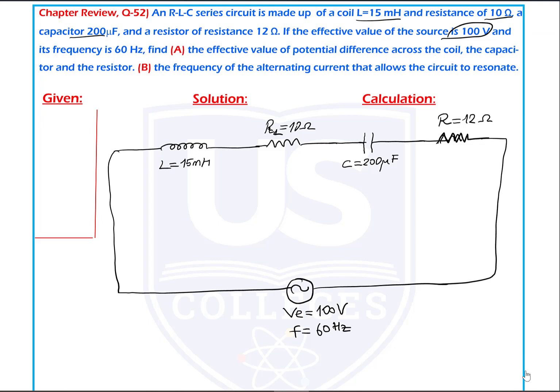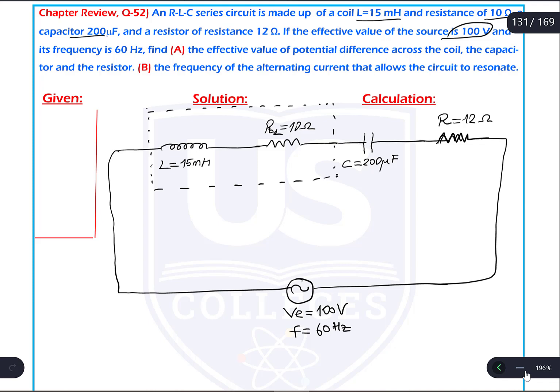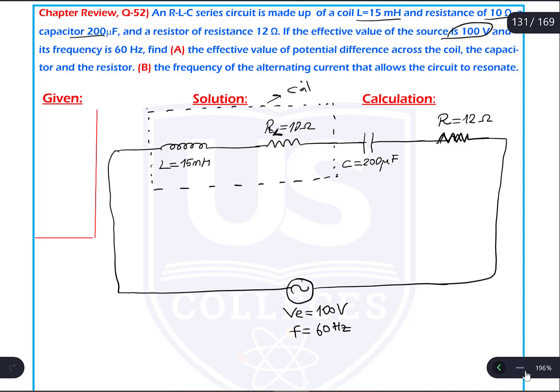Find the effective value of the potential difference across the coil, capacitor, and resistor. The coil is not pure, so it consists of an inductor part and a resistor part. To get the potential difference, I have to know XL and XC. R values are given as 10 and 12 ohm, but we have to calculate XL for the inductor part of the coil.